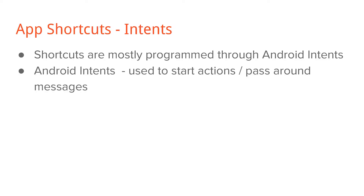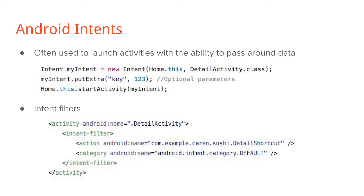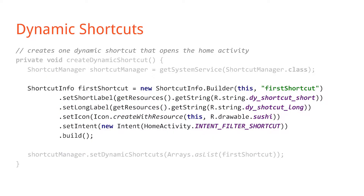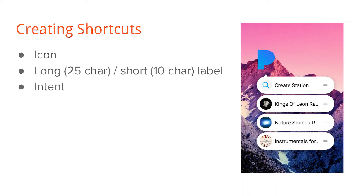App shortcuts are based on intents — just like if you had a button on your activity and you wanted to go to another activity, you create an intent to start that activity. You can define them in your XML files or in your Java code. You could do a short text, a long text for bigger phones, app icons, even change the colors of the text, and control the ordering of the app icons. It's really customizable.